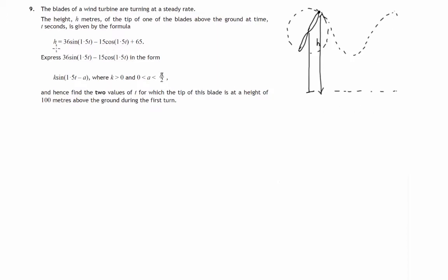The formula for H is given here. We've got two parts: one with sines and cosines in it and a plus 65. The plus 65 is where the center of the wind turbine is 65 meters above the ground, and this part with the sines and cosines gives the sine wave.